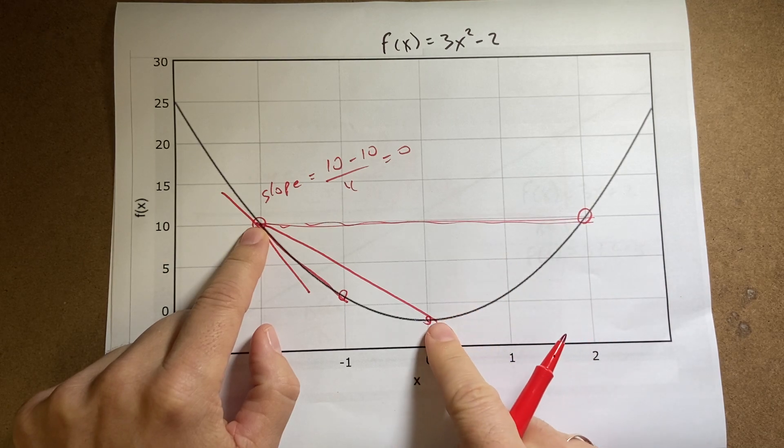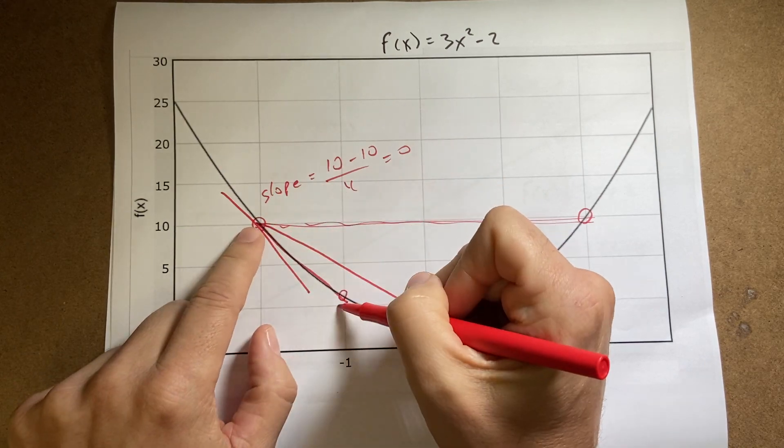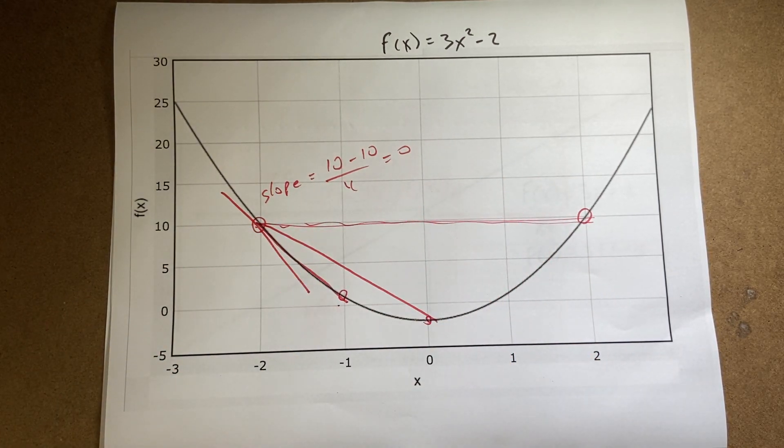That would be this line right here. But it doesn't really have any of these points. What I want to do is to take, if I could let these two points that I used to find the slope become infinitely close together, then I would get the actual slope. And so that's exactly what we are going to do.